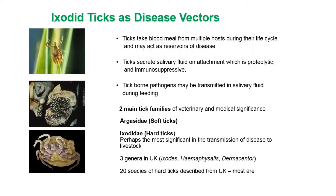There are two main tick families of veterinary and medical significance. The first is the argasids, or soft ticks — you can see a picture of an argasid in the bottom left-hand side. These are mainly transmitting diseases of medical significance, with one or two that affect livestock. But the main group are the ixodids, or hard ticks, perhaps the most significant in the transmission of disease to livestock.